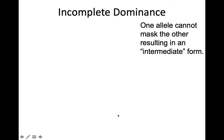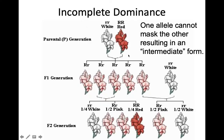The first one I want to talk about is incomplete dominance, where one allele cannot totally mask the other, and what we get from that is an intermediate, or kind of in-between result. One of the nicest ways to look at this is to think about flowers. In some instances, instead of just having one flower color dominant over the other, we'll see an in-between when you have a heterozygous mix.